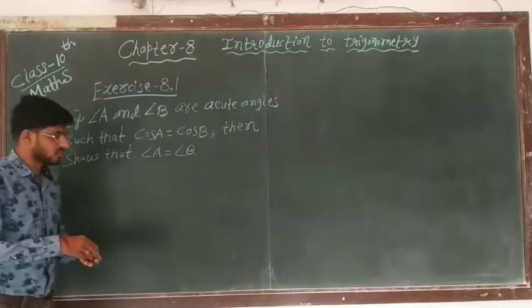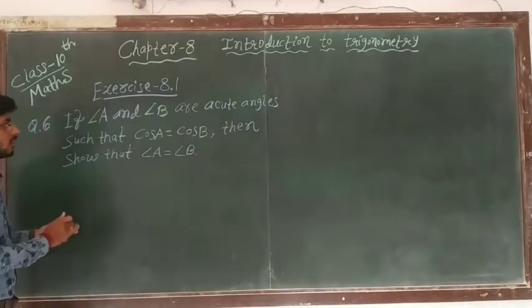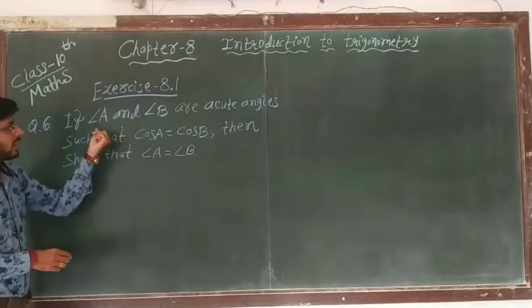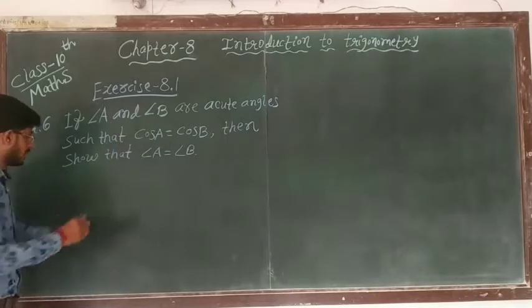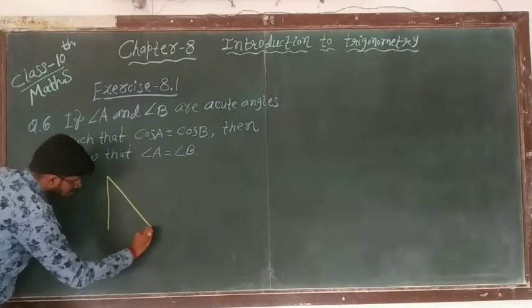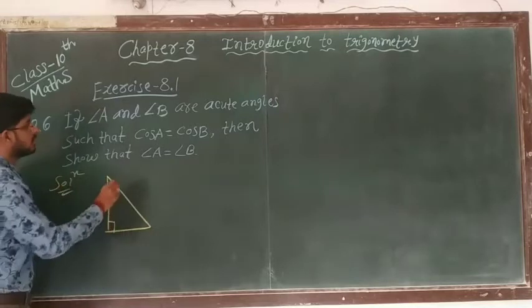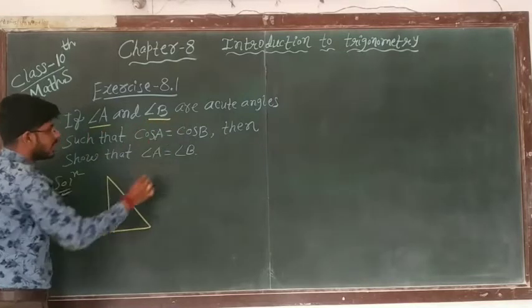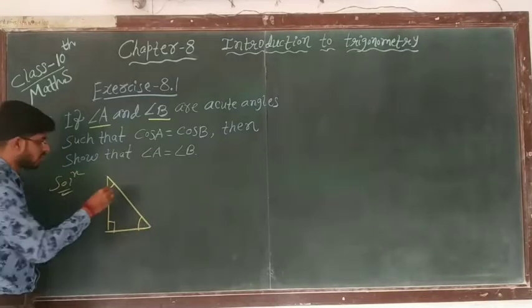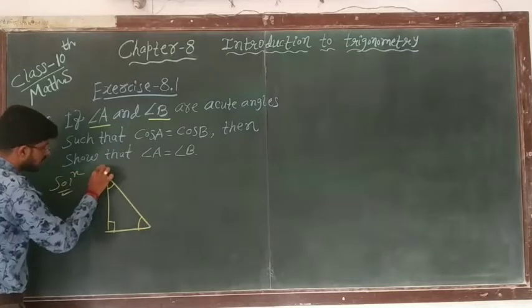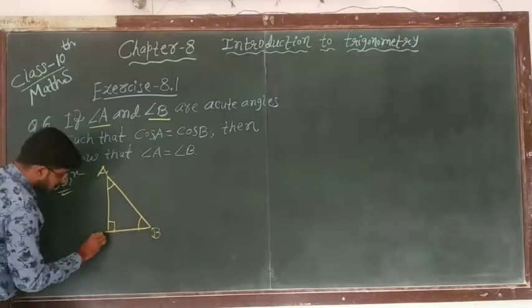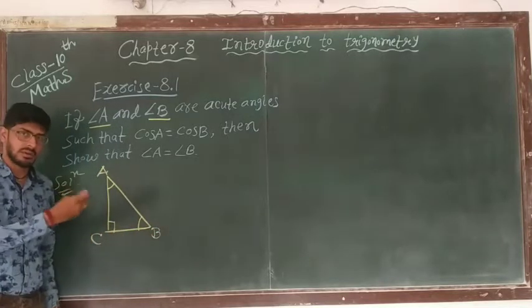So first of all we need to draw a triangle where angle A and B are acute angles. Solution: here angle A and angle B are acute angles, so it means less than 90 degrees. So we have to denote angle A, angle B here, and we can write C for the triangle.